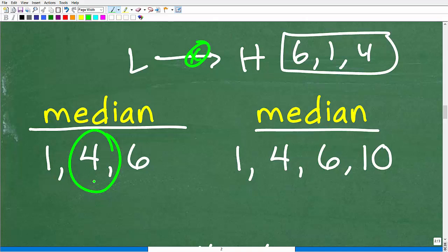So right here, the median is 4. Nothing to do here. But here we have three numbers, right? We have one number on the left, one number on the right. So it's pretty clear what the middle number is. It's going to be 4.